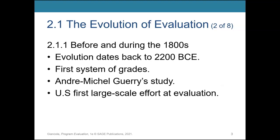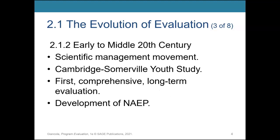Evaluation has been around informally forever, but starts to really formalize itself during the 1800s. We start to see some human evaluation of systems or employees way back in China in 2200 BCE. But then in the 1800s, we start to see evaluation using grades in education and other contexts as well. Evaluation starts to develop as a way to make things more measurable in terms of measuring outcomes, and then those outcomes are used to improve processes.